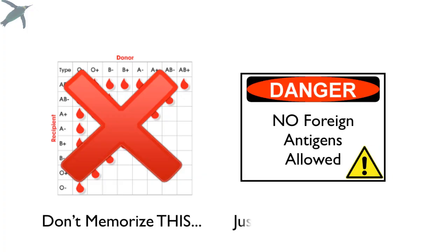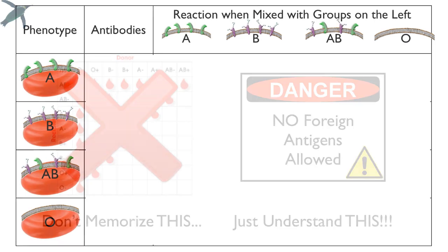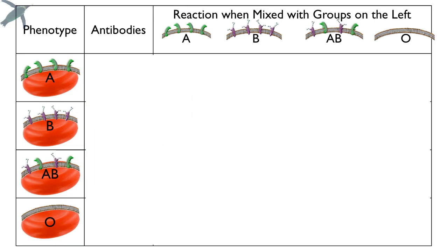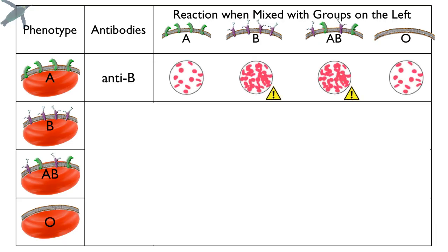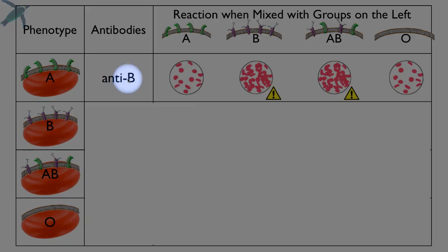This is why understanding blood types is essential when you're talking about transfusions — and why this table exists. But now you don't have to memorize this anymore. All you have to understand is that no foreign antigens are allowed. We're going to take all four blood types, mix them with the other blood types, and understand what happens and why some mixes are allowed. So for a person who has antigen A, the B antigen is foreign, and they have antibodies against the B antigen. If you mix this blood with blood type A, there's no problem — that's their blood type.